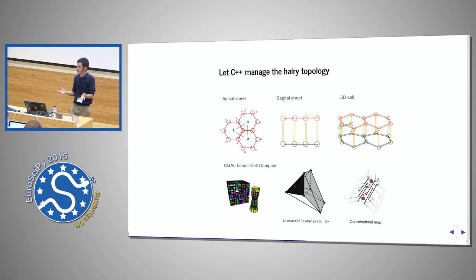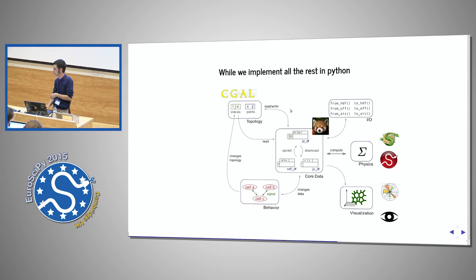So the idea now is to use CGAL to feed a model where CGAL deals with the topology, all the indices of the cells, the vertices, the faces, the points, the points also because you need them in CGAL anyway, and then use data frames as the core data because it's so easy to make computations with data frames. So now I.O. is easy.